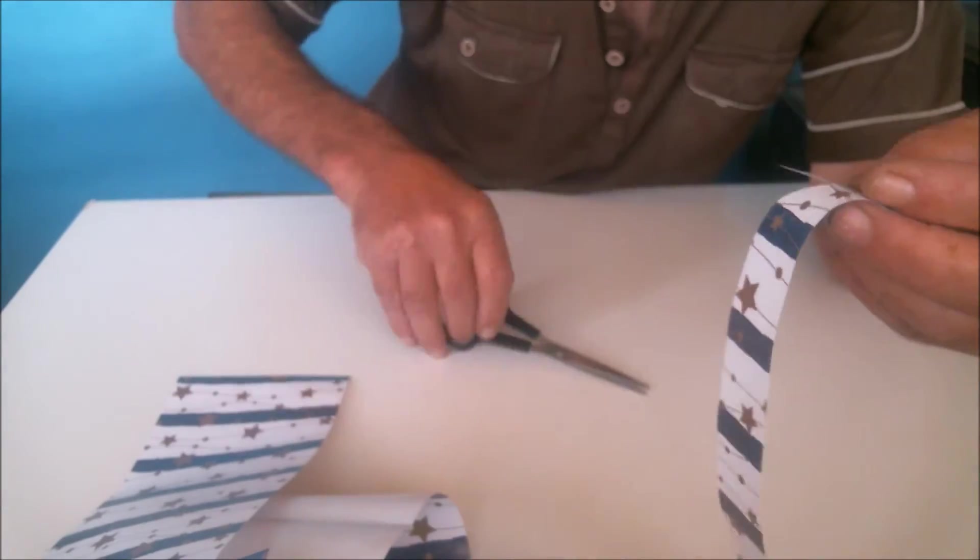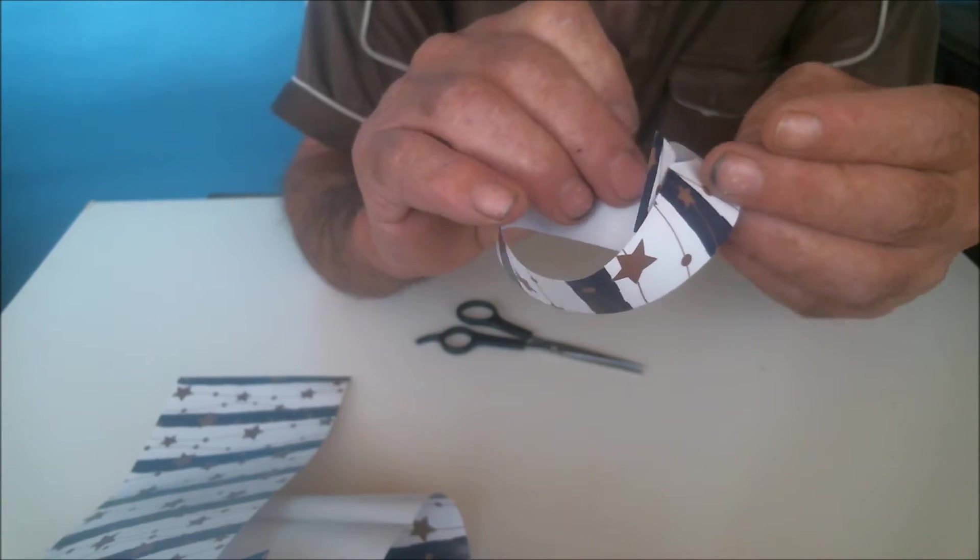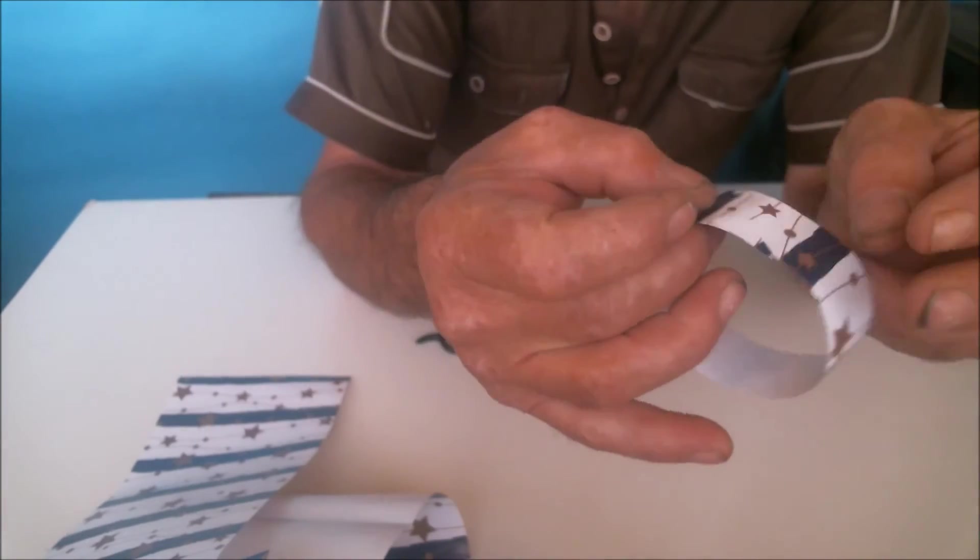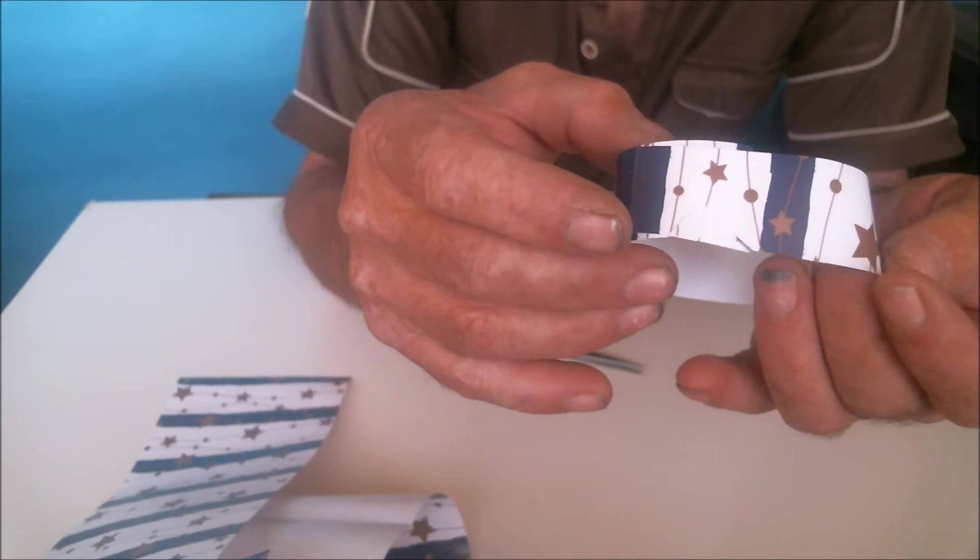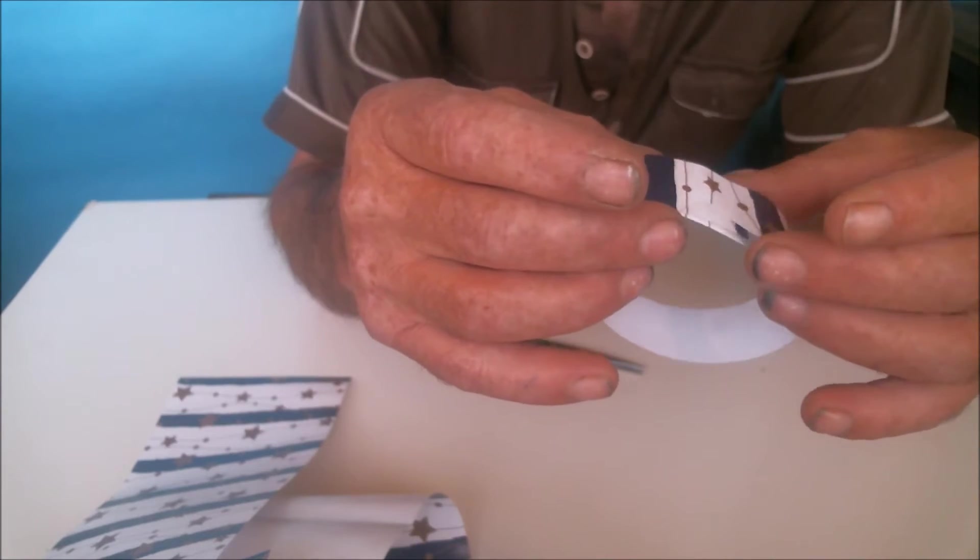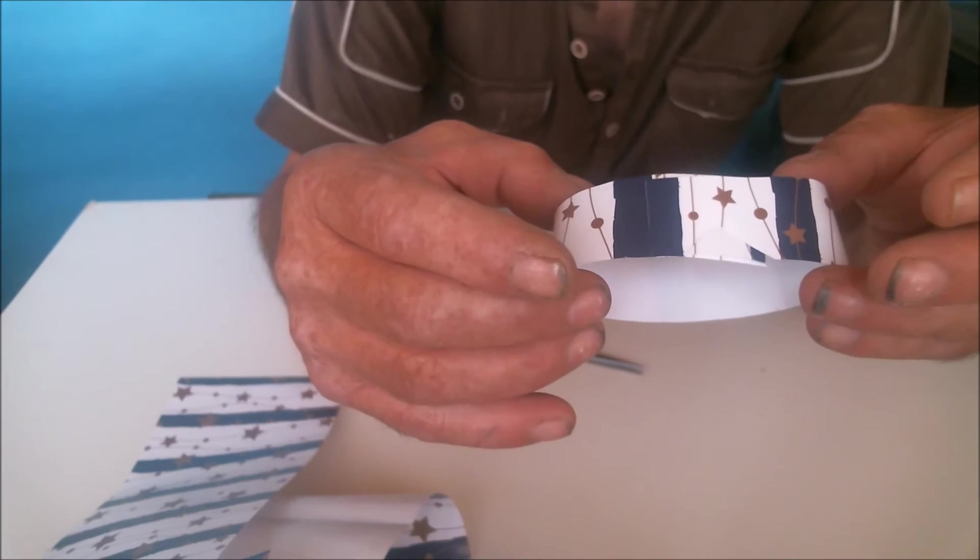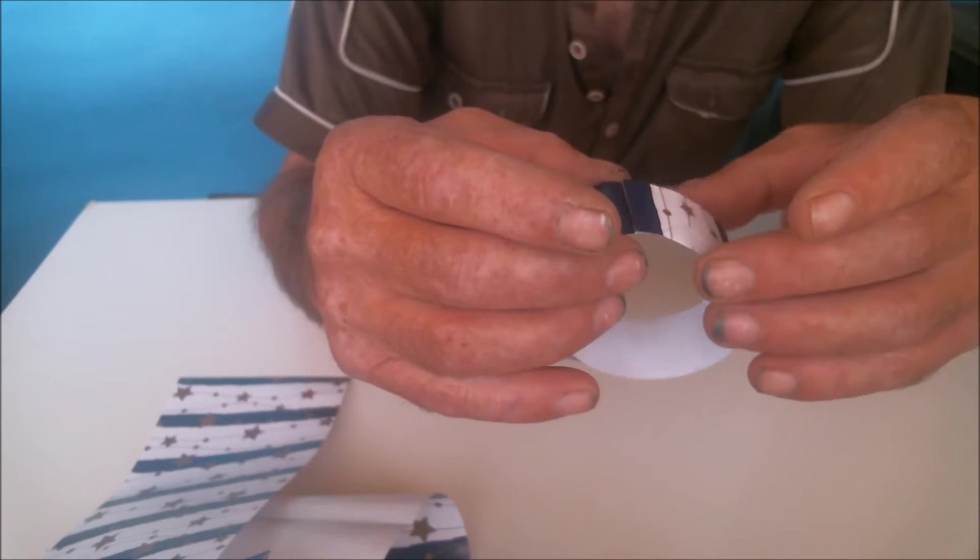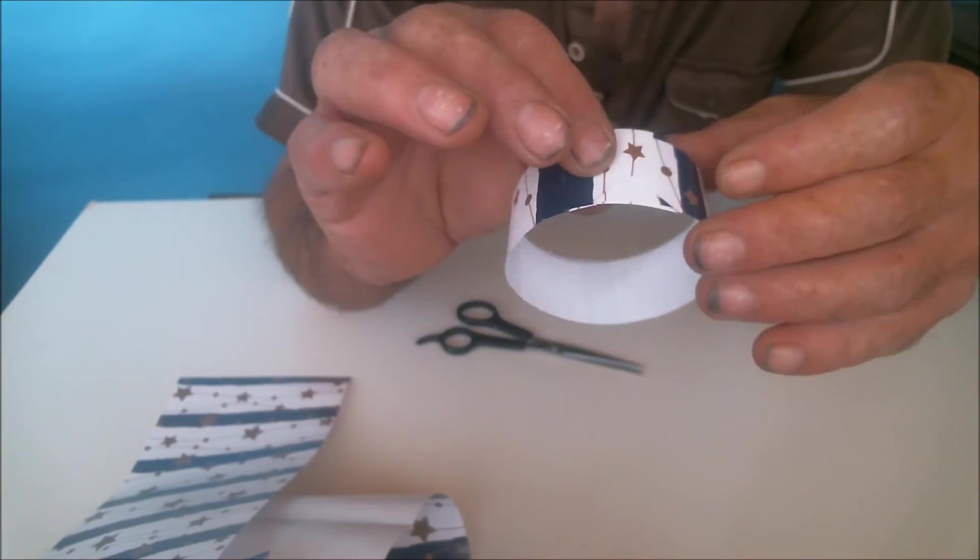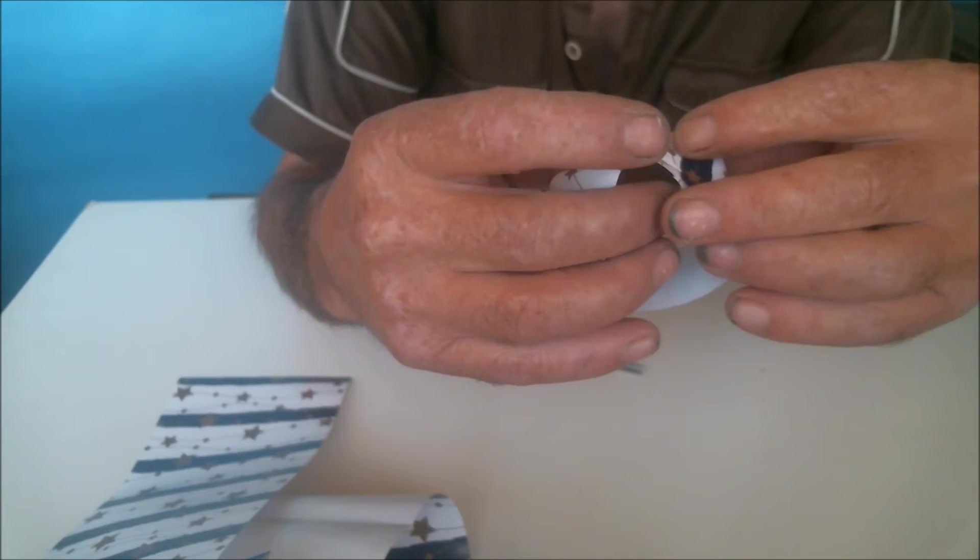Then we turn these around and we link them. There they are linked and they won't separate unless someone pulls very hard. Now if you prefer, you can put a bit of glue there and it will stay permanent, but this little cut helps you to link them easily, fast and easily.